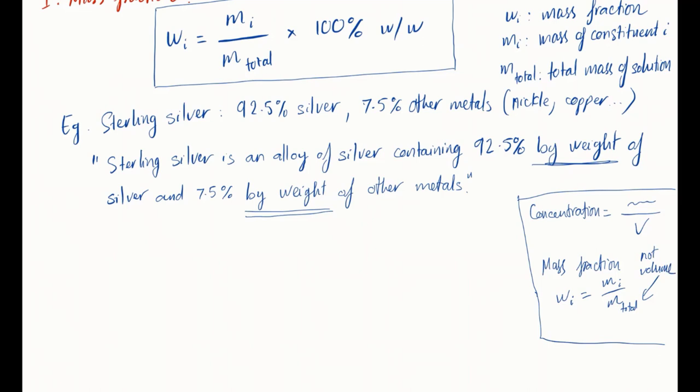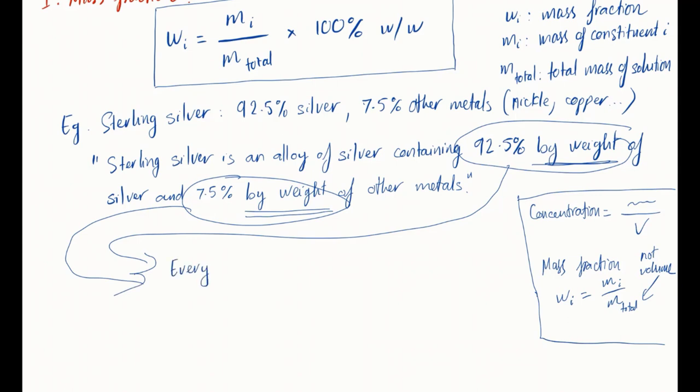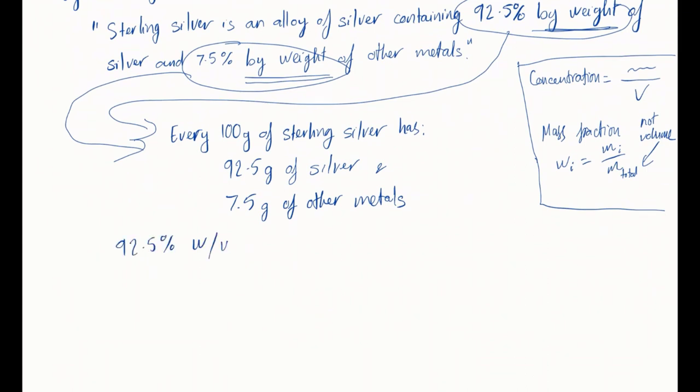So a sterling silver alloy containing 92.5% by weight of silver and 7.5% by weight of other metals means that for every 100 grams of the alloy you get 92.5 grams of silver and 7.5 grams of other metals. You can write that in terms of mass fraction as sterling silver contains 92.5% W slash W, meaning by weight, and other metals 7.5% W slash W, or by weight.